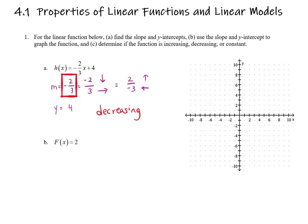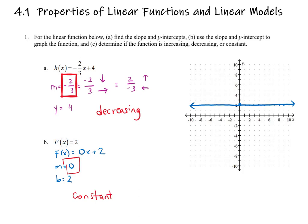I erased the graph to give us room to do part b of question one. When you look at this equation, it might not be evident that it's in slope-intercept form, but if I rewrite it, my slope is zero and my y-intercept is two. To graph this, I'll place a point at two and since the slope is zero, it doesn't go up or down — it just goes left to right. The graph goes from edge to edge. Based on the slope being zero, this is a constant function, and looking at the graph confirms it's not going up or down.